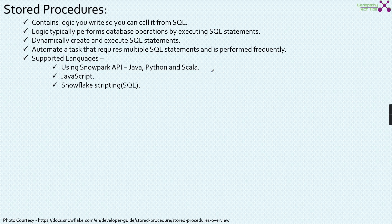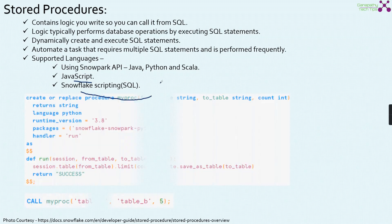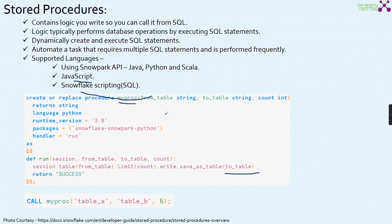The languages used for stored procedures are Java, Python, and Scala using the Snowpark API, JavaScript, and SQL using Snowflake scripting. Here is a sample stored procedure called myproc that takes from_table (string), to_table (string), and count (integer) as inputs. It runs in Python 3.8. Using the Snowpark API for Python, it uses statements like from_table.limit(count).write.save_as_table — these are Snowpark statements, not SQL statements.